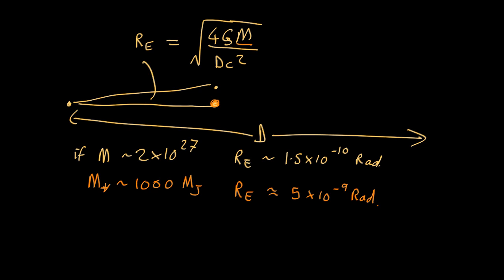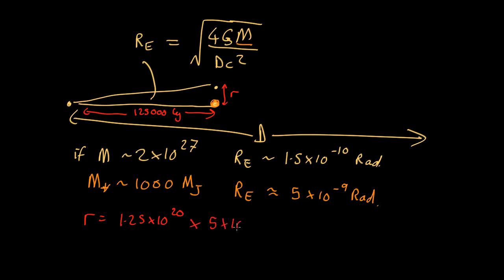So that's the angle — but what's the actual distance? If the distance is halfway to the middle of the galaxy, so about 125,000 light years, you multiply that by the angle to get r. So r is the distance: about 1.25×10²⁰ meters times 5×10⁻⁹ radians. Using the small angle approximation, that comes out to about 6×10¹¹ meters.